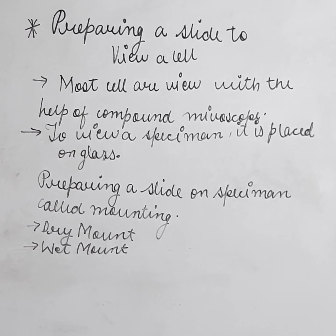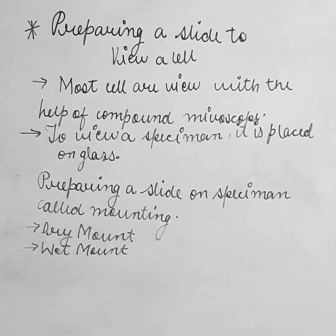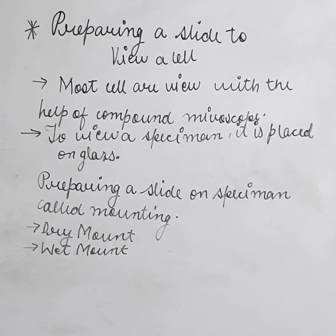Now, what is a wet mount? We can see living organisms through the microscope using a wet mount. We take a small sample, place it on the slide, and keep one cover slip on top of the sample so that we can see it in the microscope.